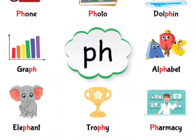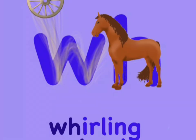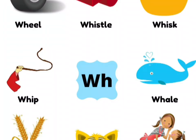Our next sound is WH, which says WH. The words for this sound include: wheel, whip, whistle, whisk, wail. Even in this sound, we throw the air out of our mouth. It's like WH.